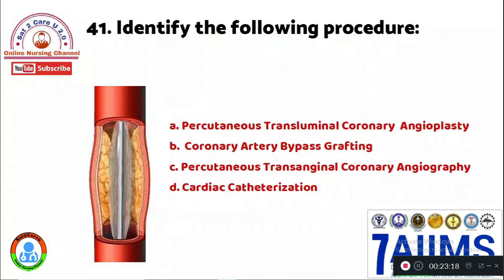Question 41: Identify the following procedure. Option A: percutaneous transluminal coronary angioplasty (PTCA). Option B: coronary artery bypass graft (CABG). Option C: percutaneous transluminal coronary angiography. Option D: cardiac catheterization. This procedure is Option A, percutaneous transluminal coronary angioplasty.